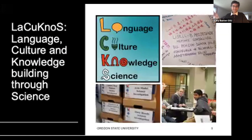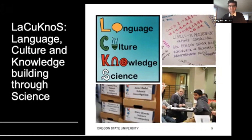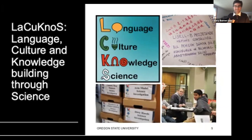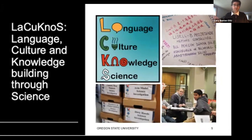Most of you are probably familiar that this project is called LAKUNOS, and LAKUNOS has three different strands or pillars. Each of those pillars has some instructional practices that we'll be talking about and working with over the next few years. The three pillars are: language development — particularly what is challenging but also powerful about scientific language; the cultural component — making connections between what kids learn in school and their interests and backgrounds outside of school; and knowledge building — helping students put together bits and pieces of knowledge into coherent frameworks about how the world works.